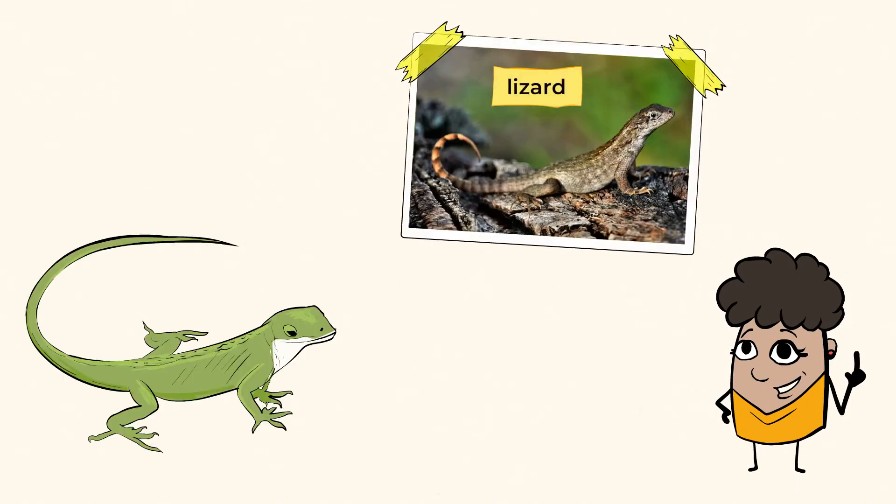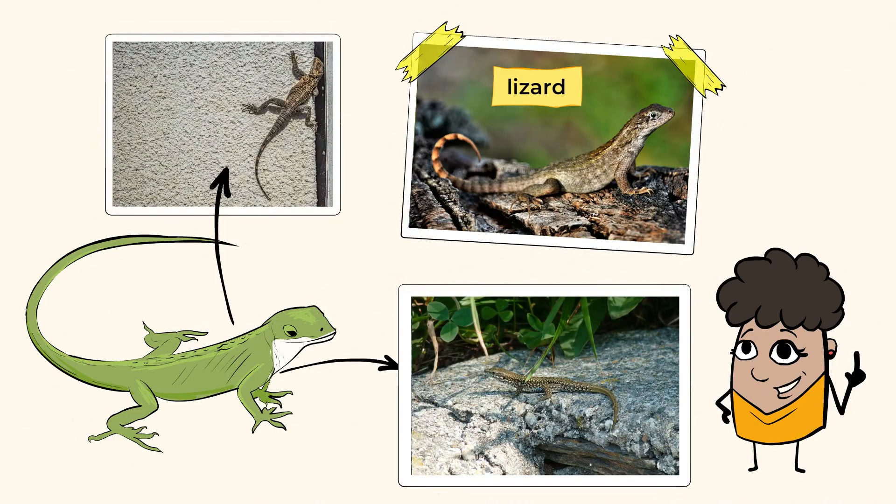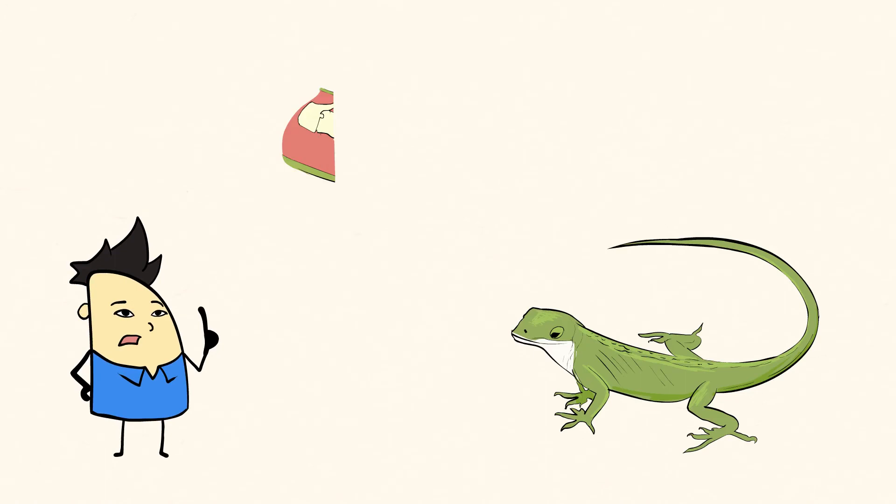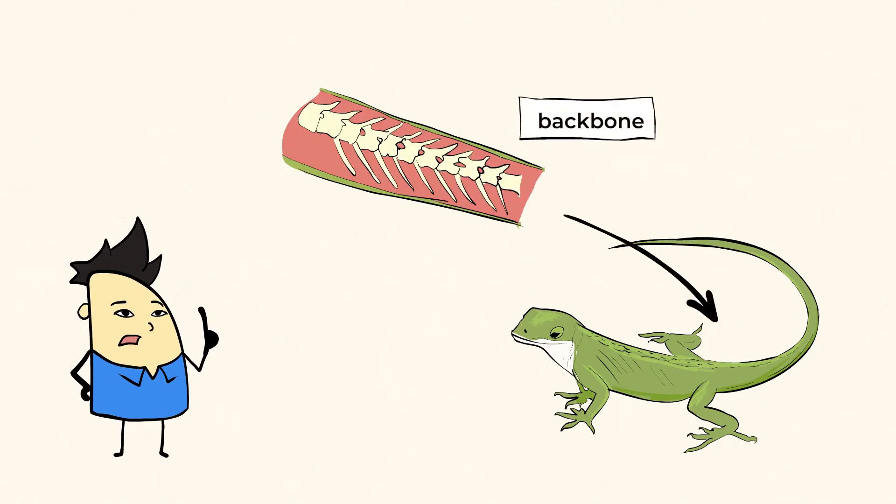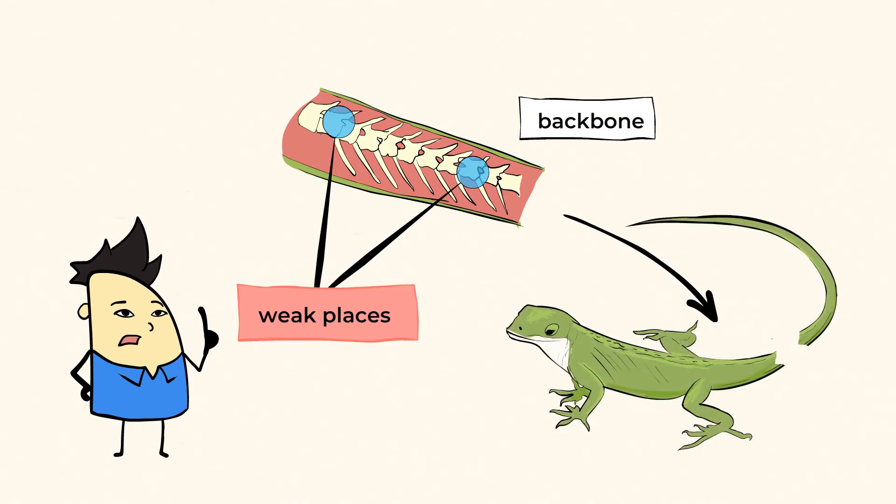In tropical environments, lizards are quite common. And you can see them walking through the grass or scurrying up a wall. Now, lizards have backbones that run down their back. And this backbone also runs all the way down their tails. And lizards have several weak spots in their tails along their backbones, where their tails can actually detach. This means when a lizard loses its tail, most likely while defending itself, the tail becomes detached from the body and can move around on the ground by itself.